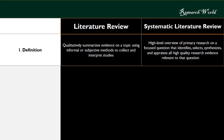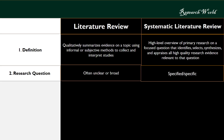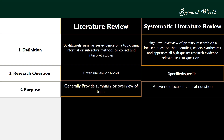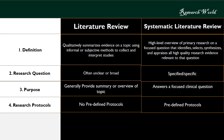In summary: a traditional literature review qualitatively summarizes evidence on a topic using informal or subjective methods, while a systematic review provides a high-level overview of primary research on a focused question that identifies, selects, synthesizes, and appraises all high-quality research evidence relevant to that question. Traditional reviews generally provide a summary or overview of a broad topic with no predefined protocols, whereas systematic reviews answer a focused clinical question using predefined protocols.